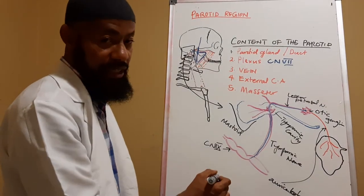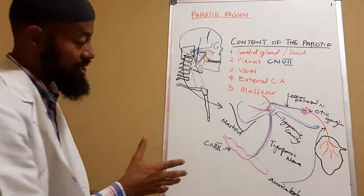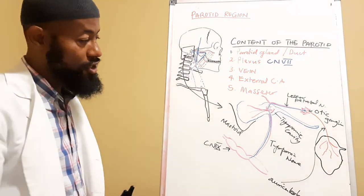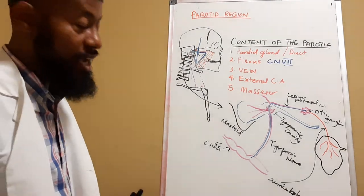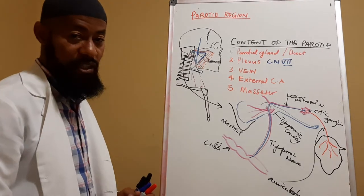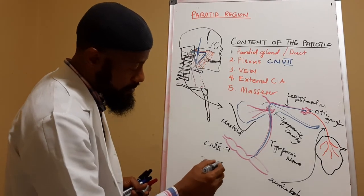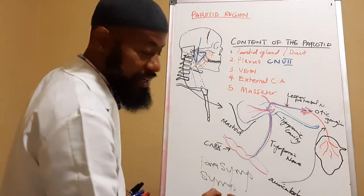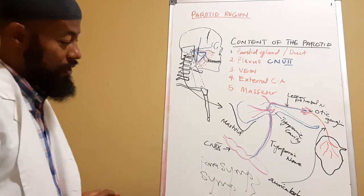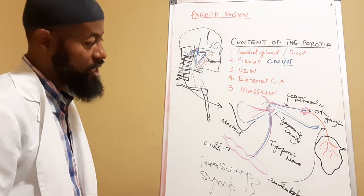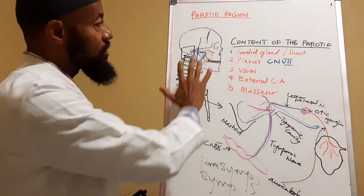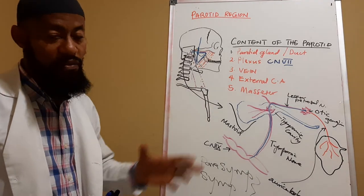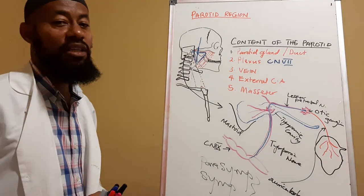The sympathetic innervation of this gland is via the cervical ganglion, passing through the external carotid plexus to reach the gland. Both parasympathetic and sympathetic innervation have secretomotor activity — both will cause secretion of saliva. I hope this helps you understand the basic anatomy of the parotid region, the contents of the parotid region, and the innervation of the parotid gland. Thank you very much.